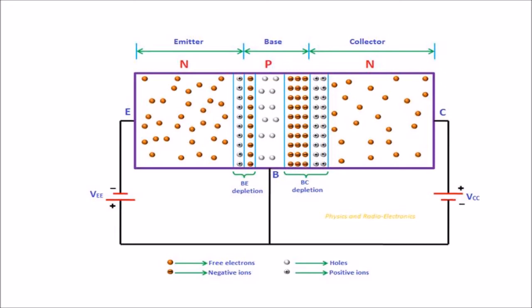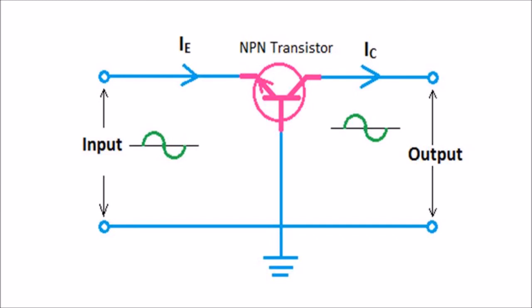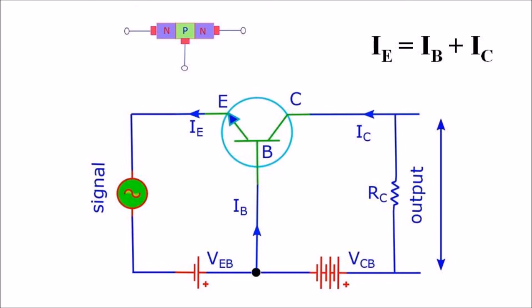The remaining large number of free electrons cross the base region and enter into the collector region. A large number of free electrons which entered into the collector region will experience an attractive force from the positive terminal of the battery. Therefore, the free electrons in the collector region will flow towards the positive terminal of the battery. Thus, electric current is produced in the collector region, primarily due to the free electrons from the emitter region. Similarly, the electric current produced at the base region is also primarily due to the free electrons from the emitter region. Therefore, the emitter current is greater than both the base current and collector current. The emitter current is the sum of base current and collector current, represented as IE = IB + IC.